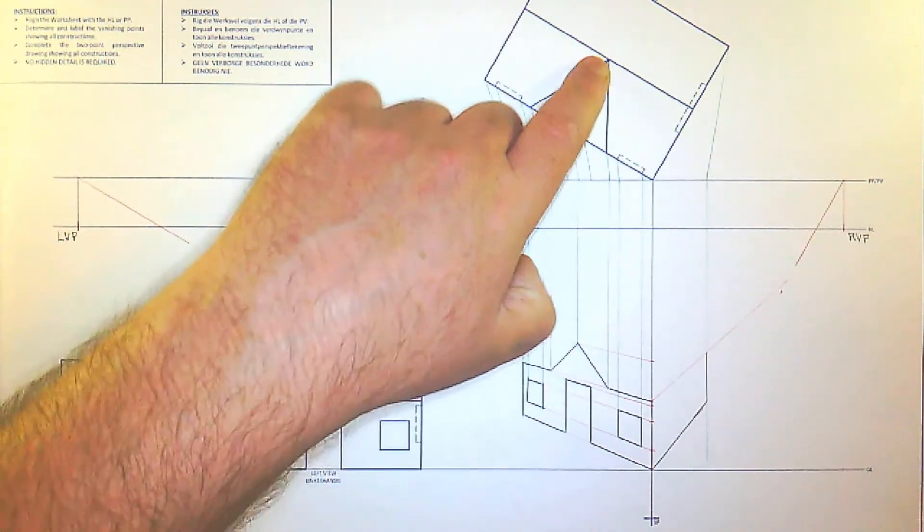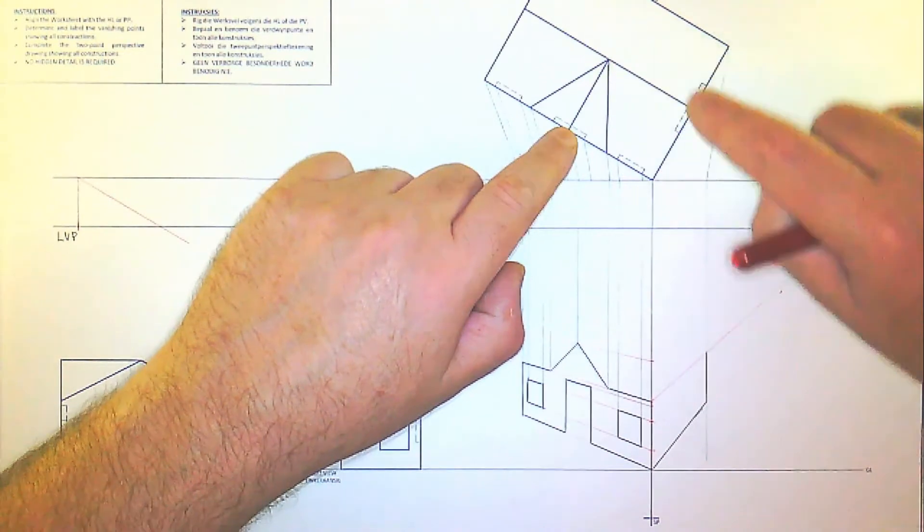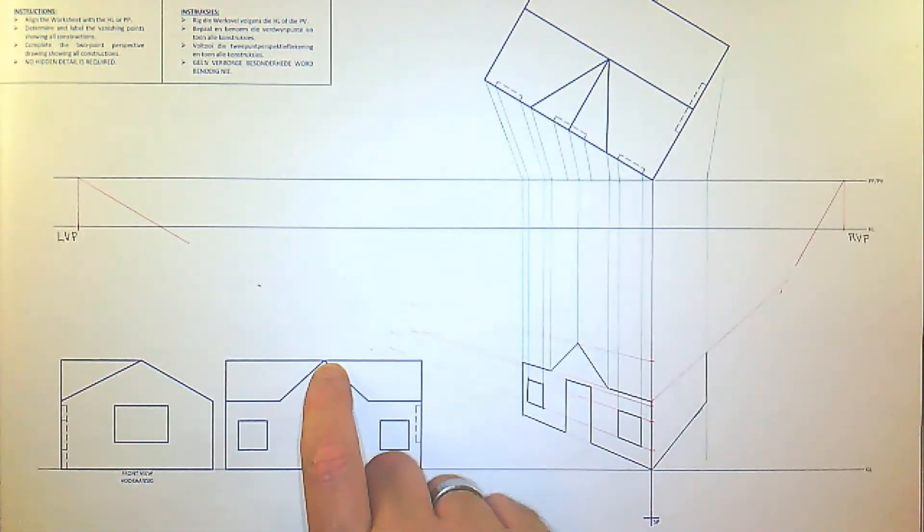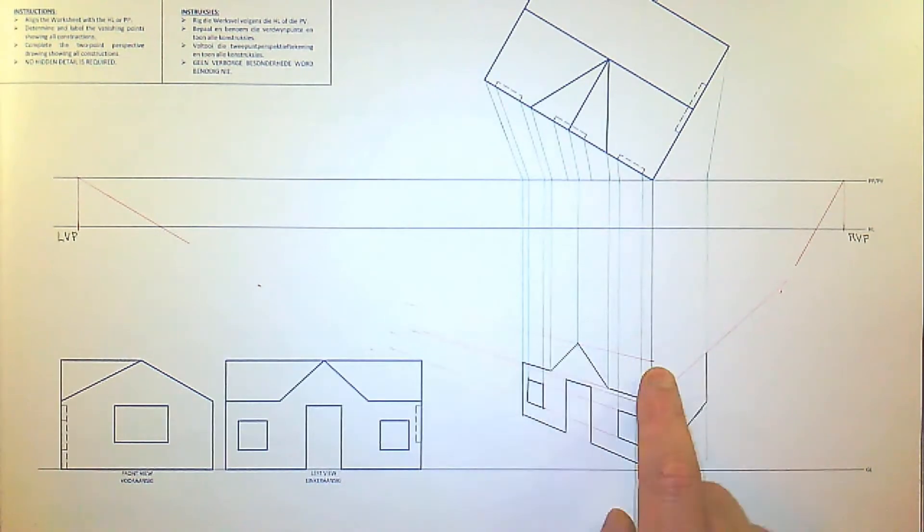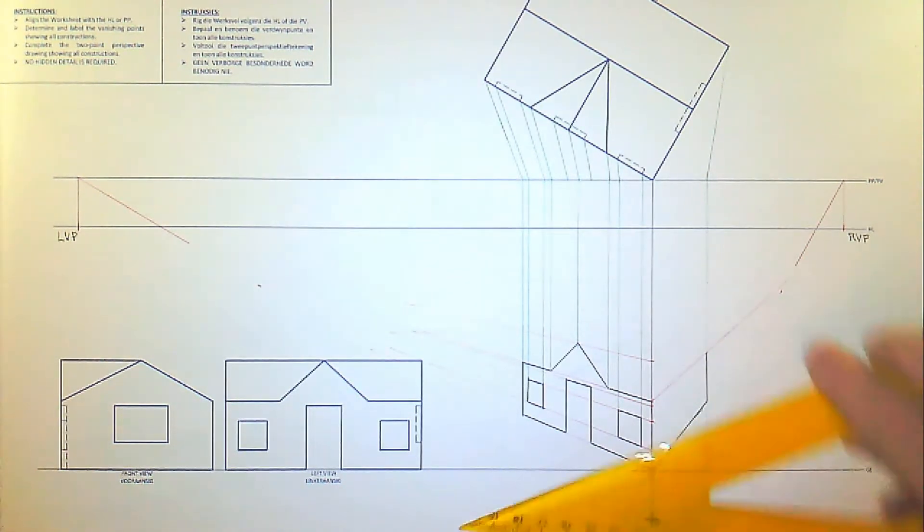Now on top, this roof line, they meet in the middle so they are actually on the same height and you can see it here in the front view as well. So we already have the height level there. Instead of doing a lot of work, all we have to do is take this point here and take it to the right vanishing point.